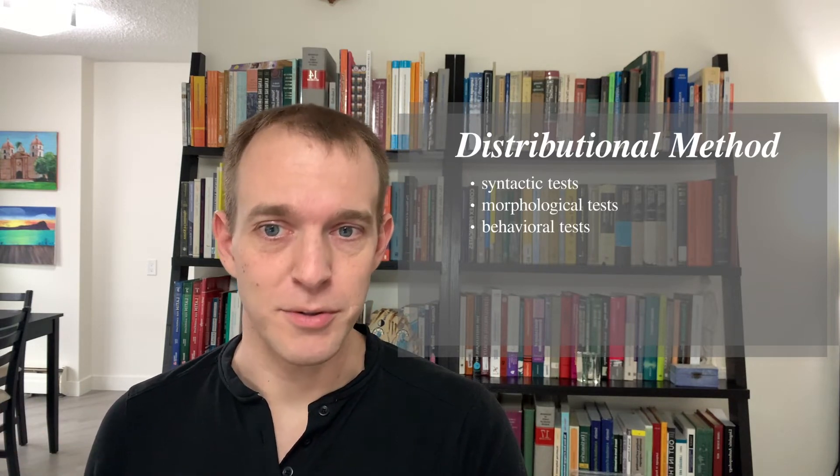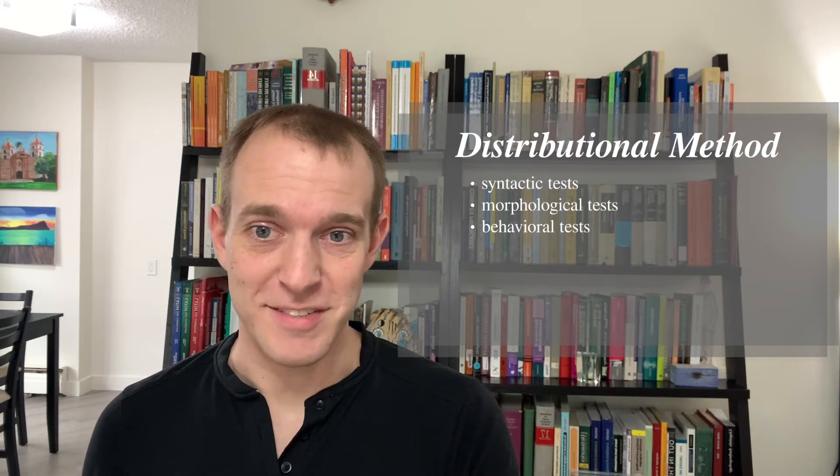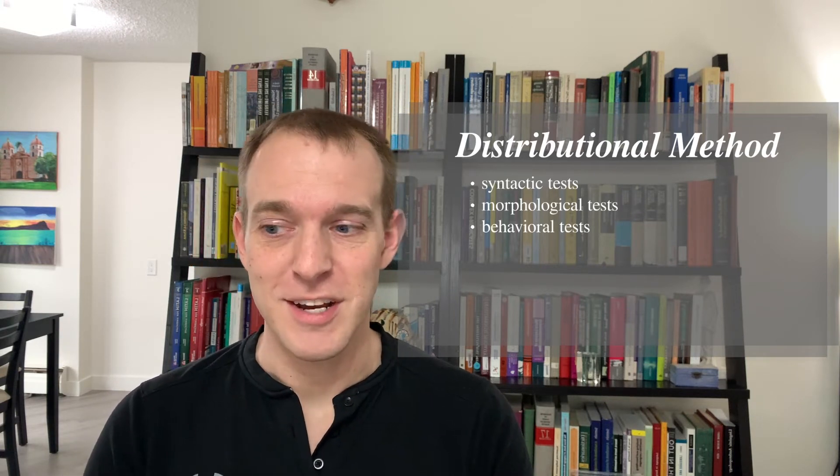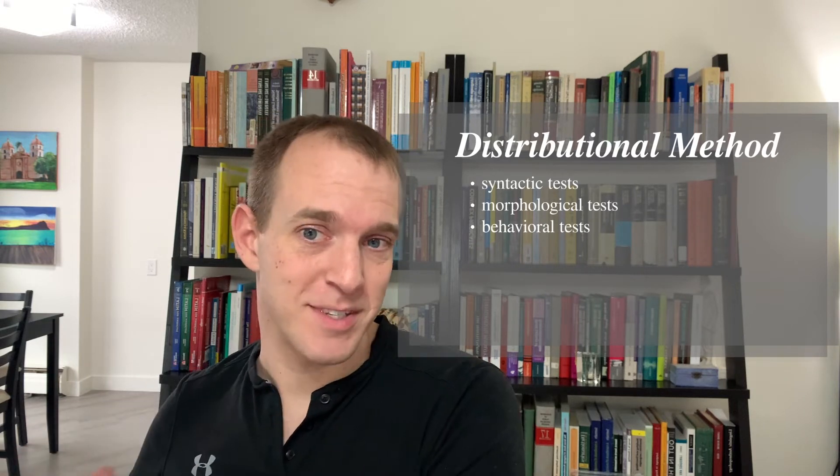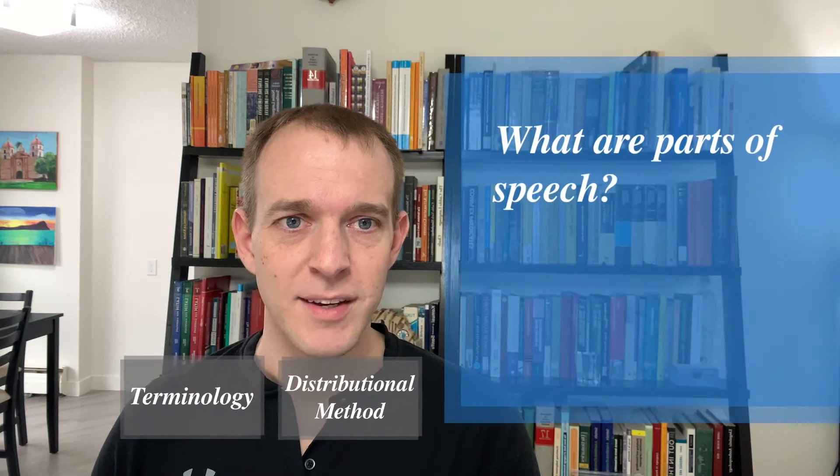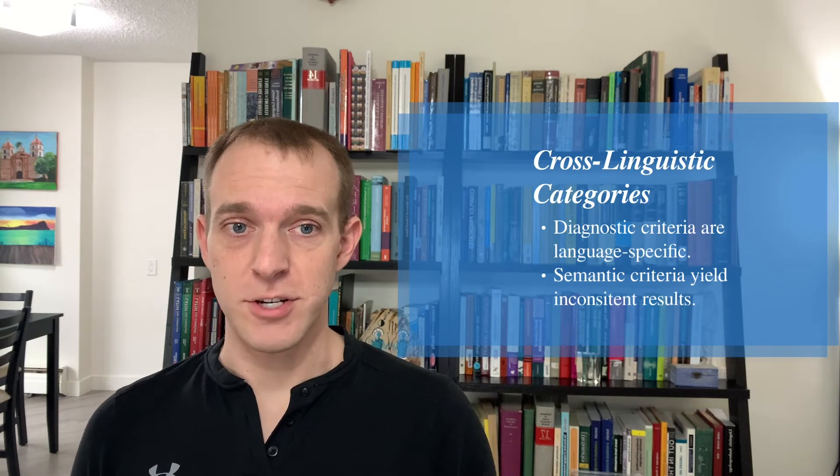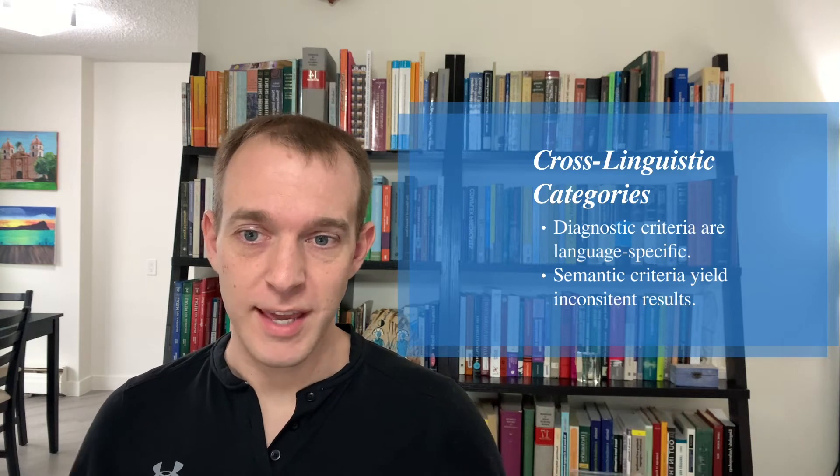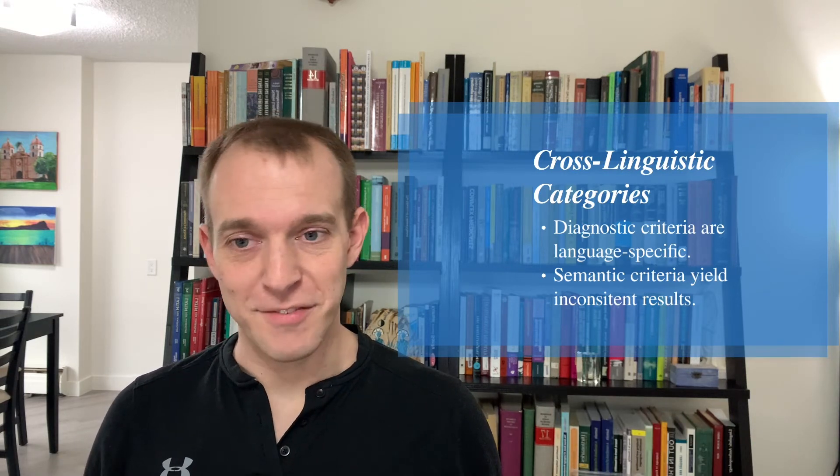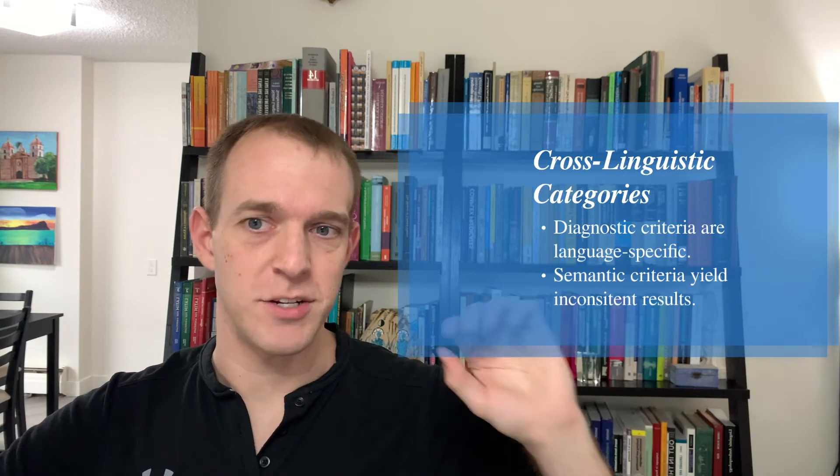There are some languages that things that we would call adjectives in English are analyzed as verbs, like to be blue. Clearly, the semantic definitions of adjectives in English are not going to work in this language where a word like to be blue behaves more like verbs than nouns. So that's one of the fundamental issues in parts of speech research: how do we identify these word classes across languages?